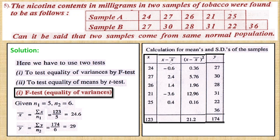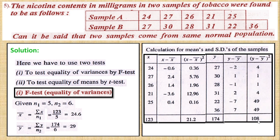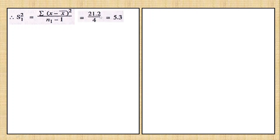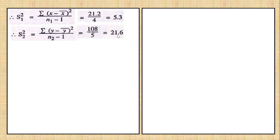The total of (x − x̄)² is 21.2. Similarly, the summation of (y − ȳ)² is 108. Now we calculate S1² and S2². Capital S1² equals summation (x − x̄)² divided by (n1 − 1). The numerator is 21.2, denominator is 5 minus 1 which is 4, so S1² equals 5.3. Similarly, S2² formula and values applied gives 21.6.